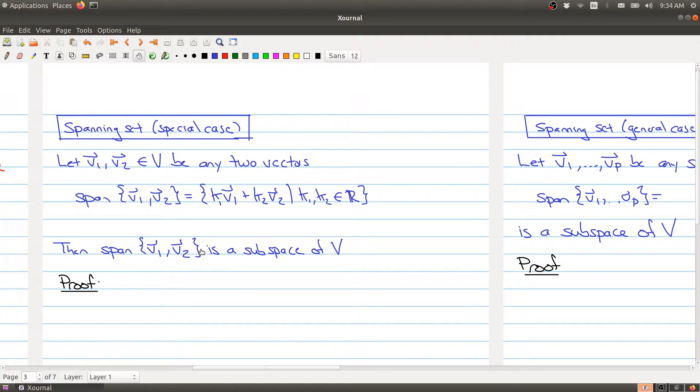Welcome back. We've been talking about subspaces of a vector space. What I want to do now is introduce a new set, which we've seen in the special case of Rn, and then show that this is an example of a subspace of your vector space. So we're going to do a special case first.